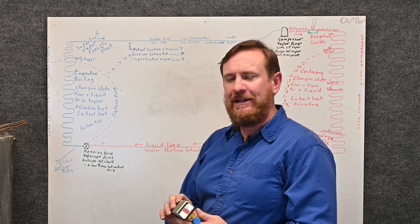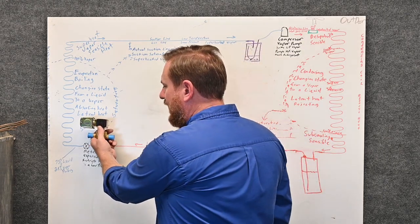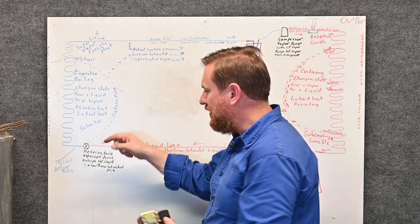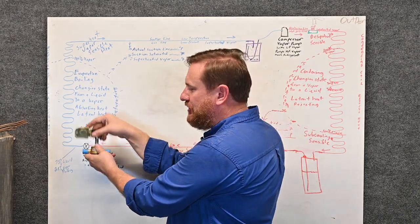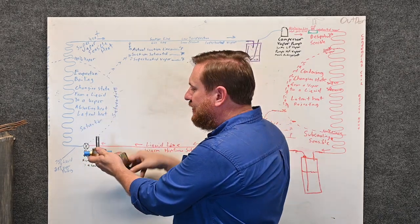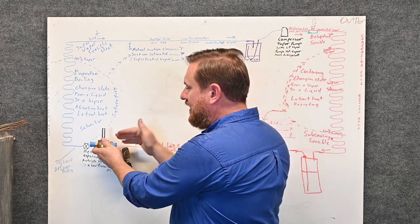What this does is an automatic pump down. So what happens, this valve closes off. Think about the flow of refrigerant going this direction. And this valve, when we're de-energized, we've killed the electromagnet so the valve closes. So the refrigerant can't go any farther.